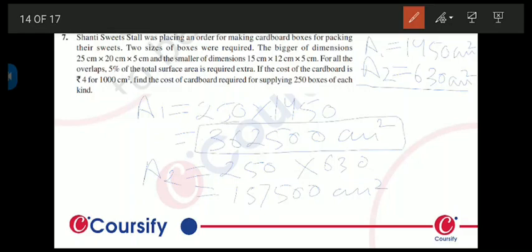हमें एक और question में data given है that जितना box बनाने में cardboard required होगा, उससे हमें 5% extra लेना है to overlap. So हम इसका 5% निकालेंगे, that means...